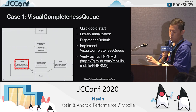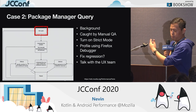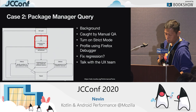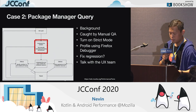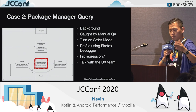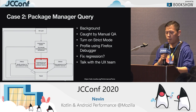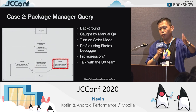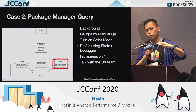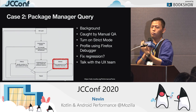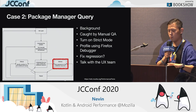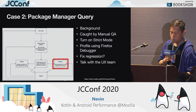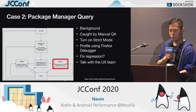Another use case is the package manager example. We first caught this in manual QA. We turned on strict mode and used the Firefox debugger to understand what was happening — we found many 3xx HTTP redirects. We decided to fix it, but then realized it's a UX requirement: we don't want to cache the package manager result because the user might uninstall the app. So the UX team wants to make sure the app is really installed on the device, meaning the query time is unavoidable. We discussed with the UX team and decided not to fix it — it's by design. And we wrote it down.